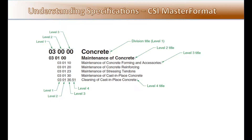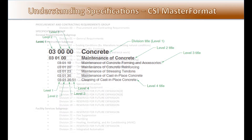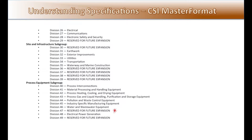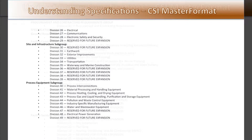The first two numbers represent the top level in the system and identify divisions. The remaining numbers represent additional levels of detail and are used for identifying related areas of information within the division. There are 50 major divisions in all. Note that not all of the division numbers are used — some divisions are being reserved for future expansion.